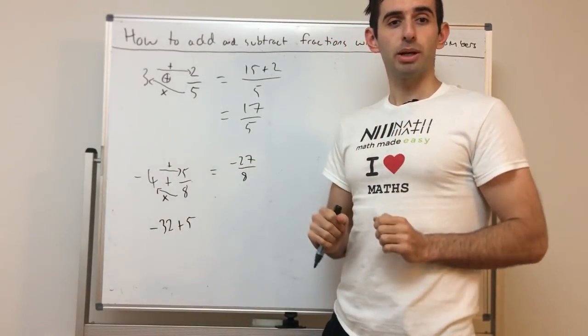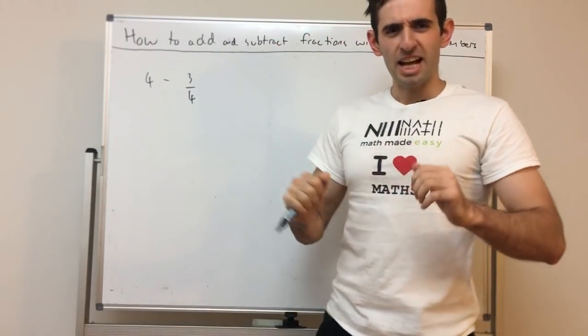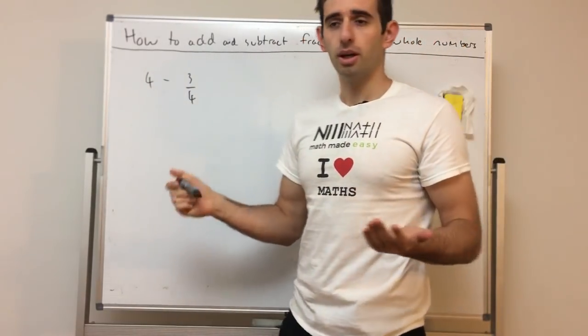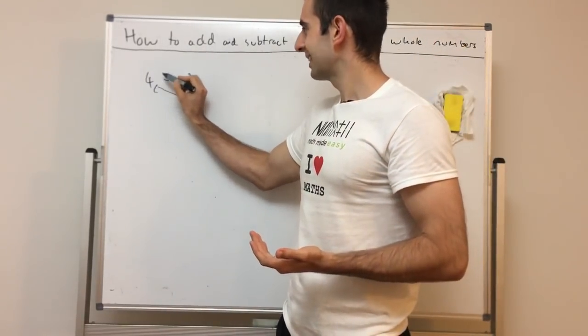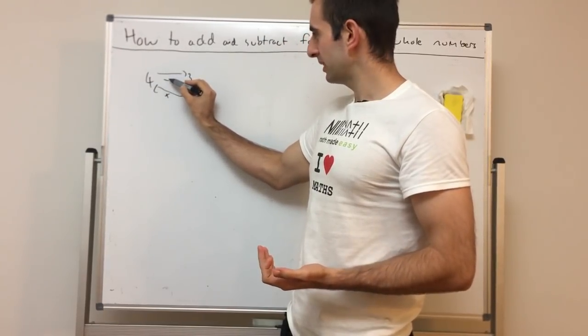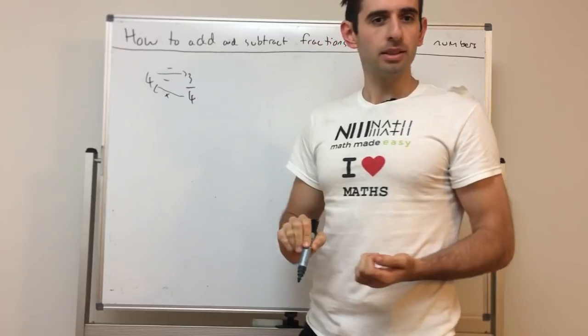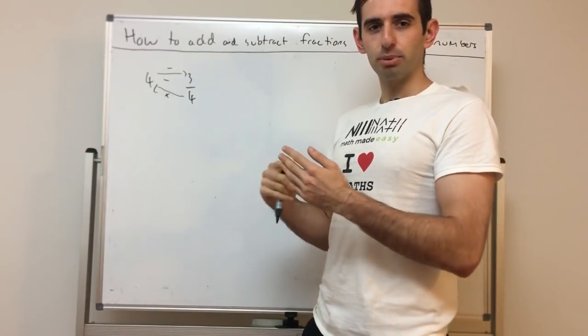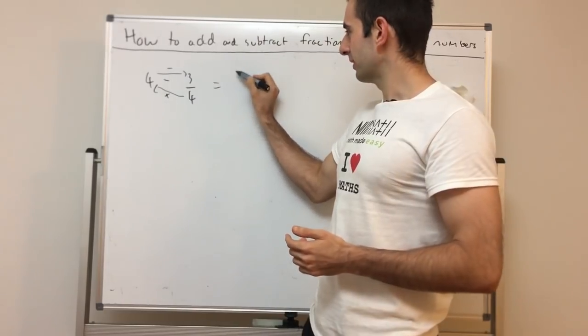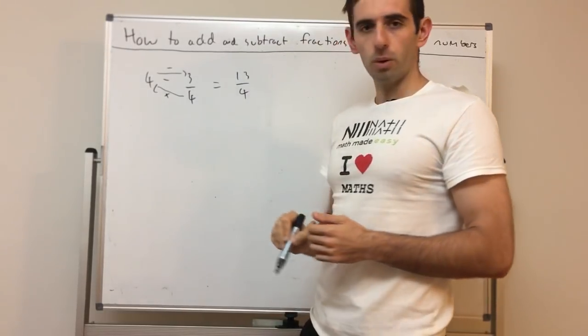Now let's look at subtracting. How to subtract fractions with whole numbers? It's the exact same process. We're going to times across, and now instead of add, it says subtract. That's the process. 4 times 4 is 16, minus 3 is 13, so 13 over 4.